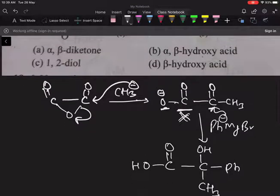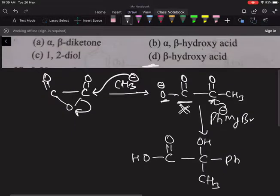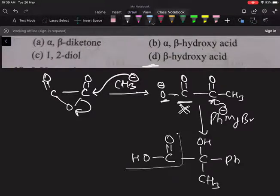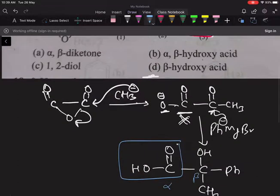In this case, if we do the product formation, then beta hydroxy acid type. Alpha beta hydroxy acid. Not carboxylic. So alpha carbon, beta carbon. Alpha hydroxy acid, alpha beta hydroxy acid.